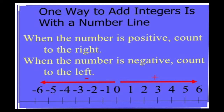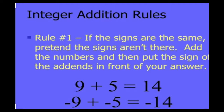Now let's learn addition of integers using rules. Rule number one: if the signs are the same, pretend the signs aren't there, add the numbers, and then put the sign of the addends in front of your answer. You can use this rule only when both integers are either positive or negative.